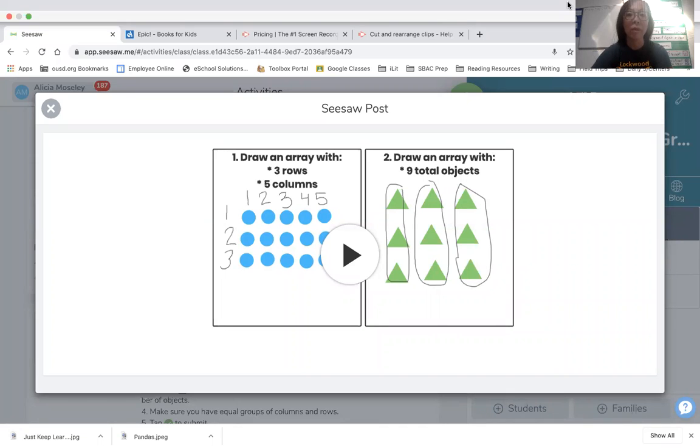All right, let's take a look at our array work now. Today, you might see two different ways that they ask you to solve the problem. You might have to draw the rows and columns. So in example number one, it says draw an array with three rows and three columns. Remember, our rows go side to side. They are horizontal and our columns go up and down. They are vertical.